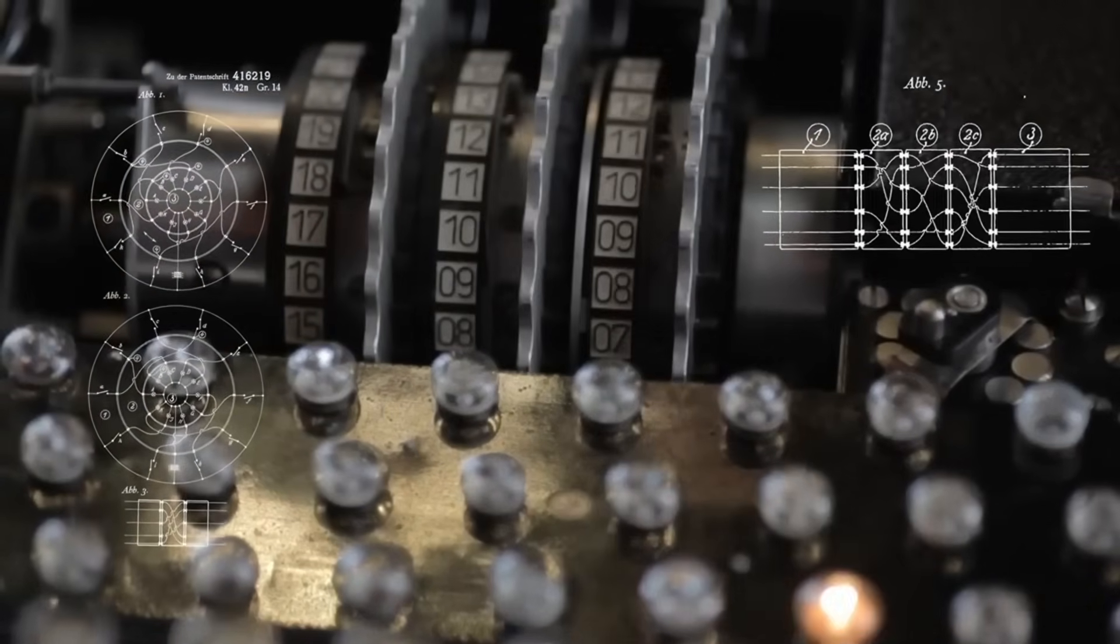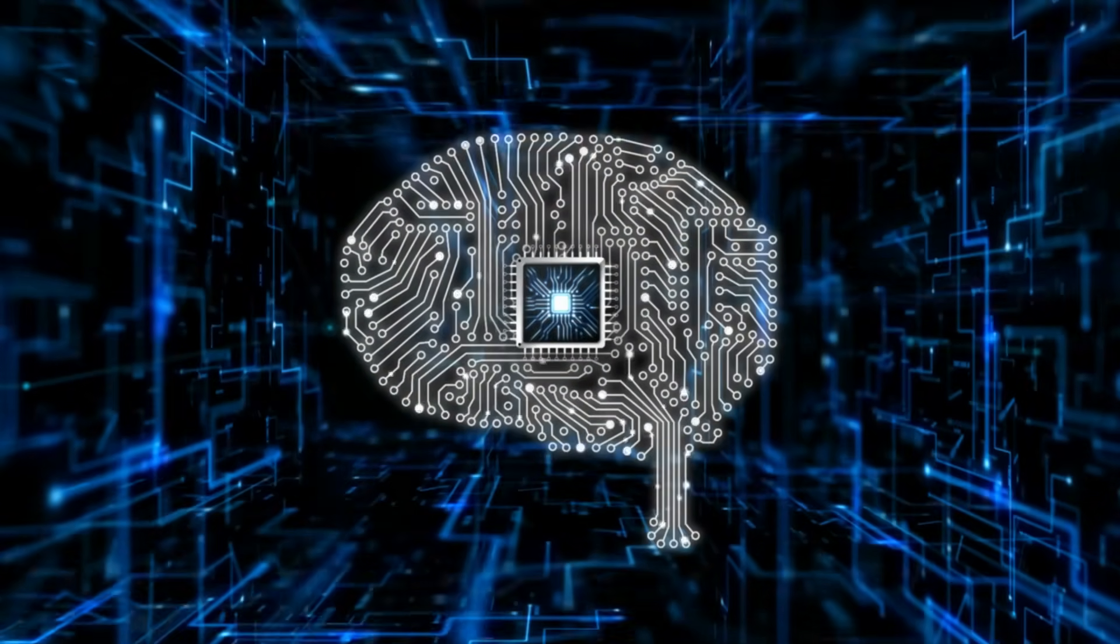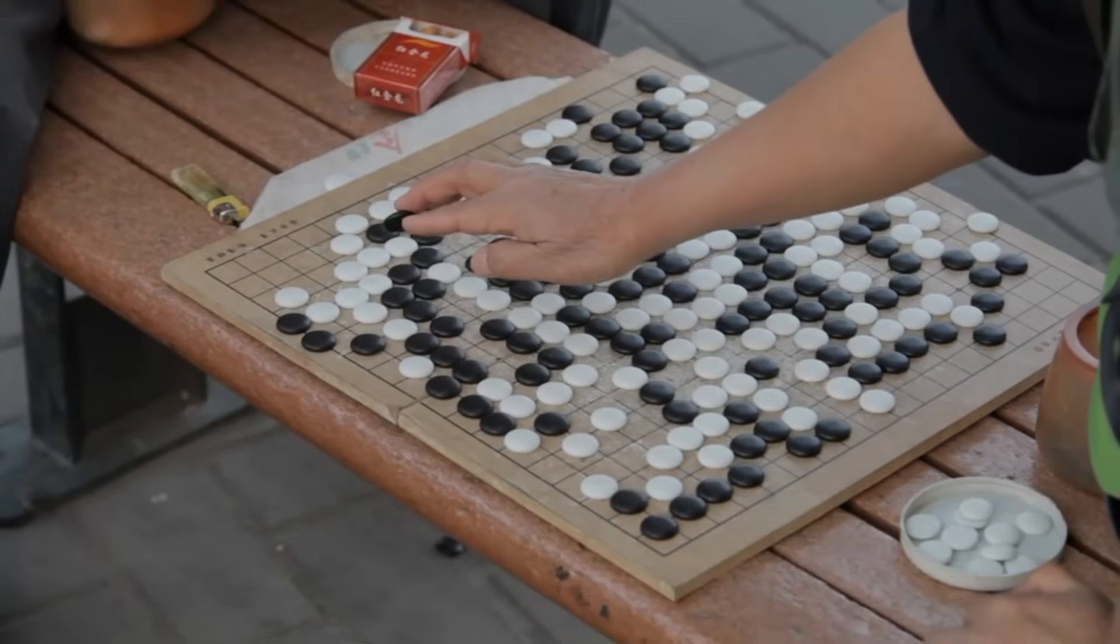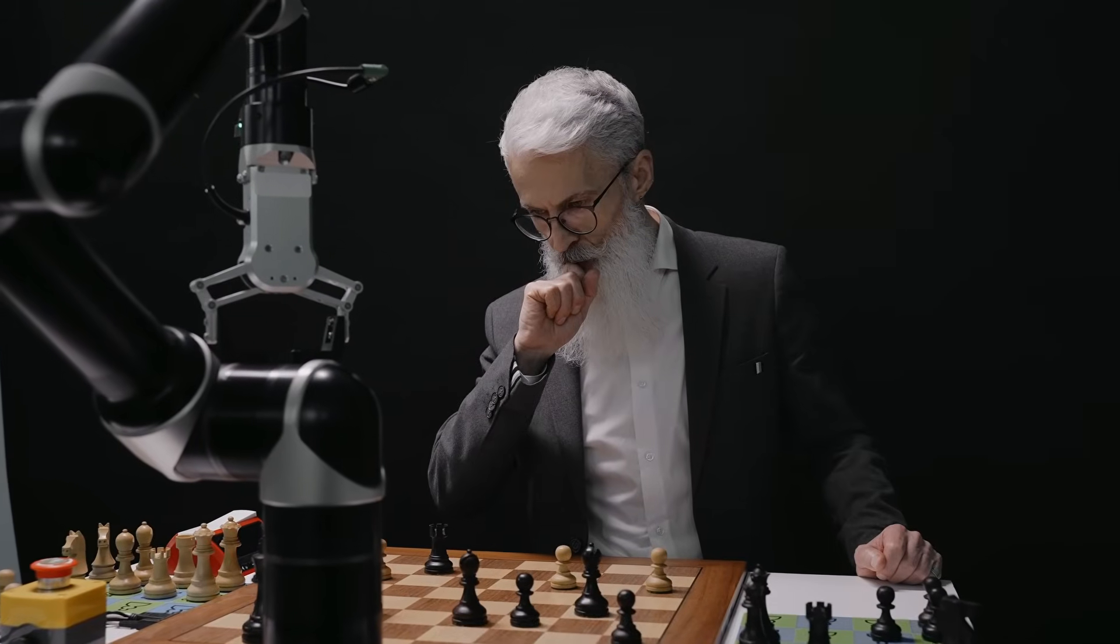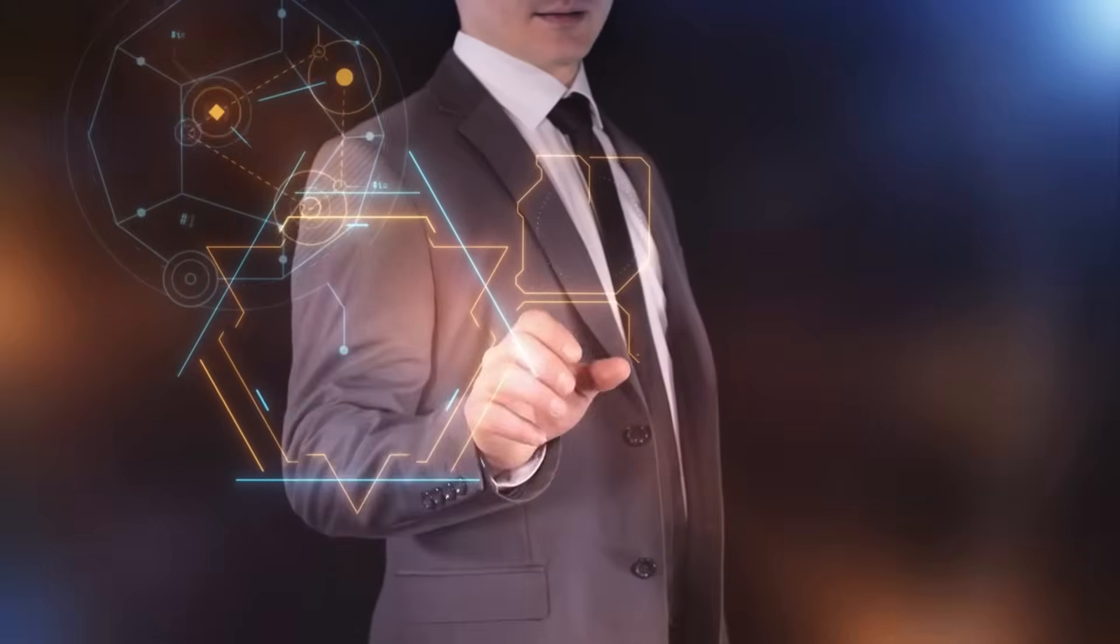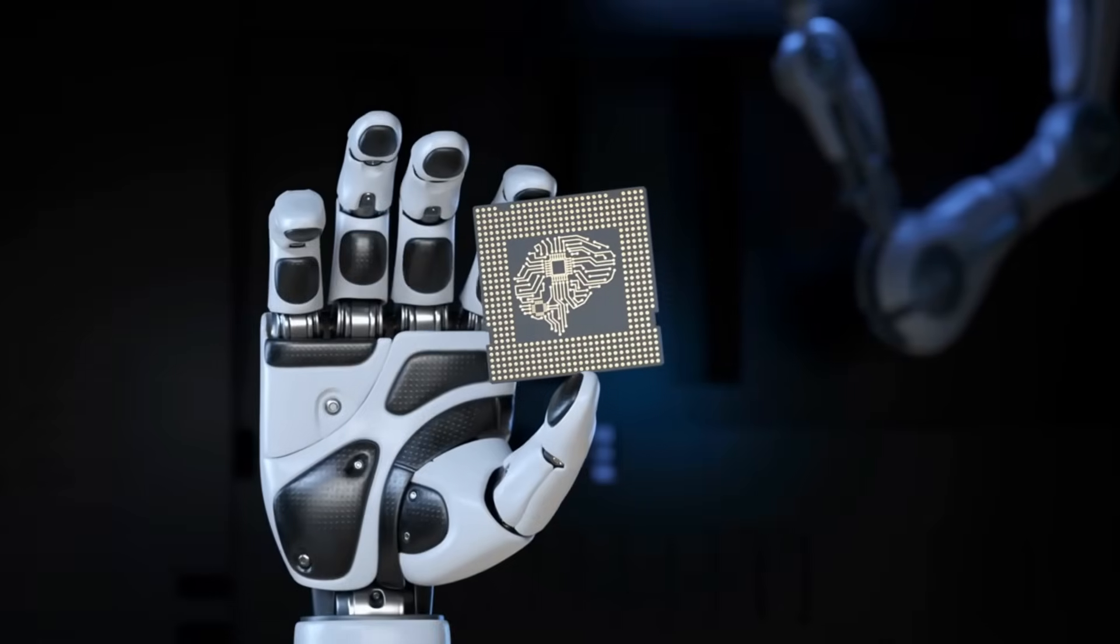Remember AlphaGo's move 37 in 2016? A moment that changed everything we thought we knew about artificial intelligence. During a match with the world's top Go player, this AI made a move so alien, so unexpected that grandmasters were left speechless. It wasn't just playing the game, it was reinventing it. The victory wasn't merely a triumph of computational power, it was a profound revelation.